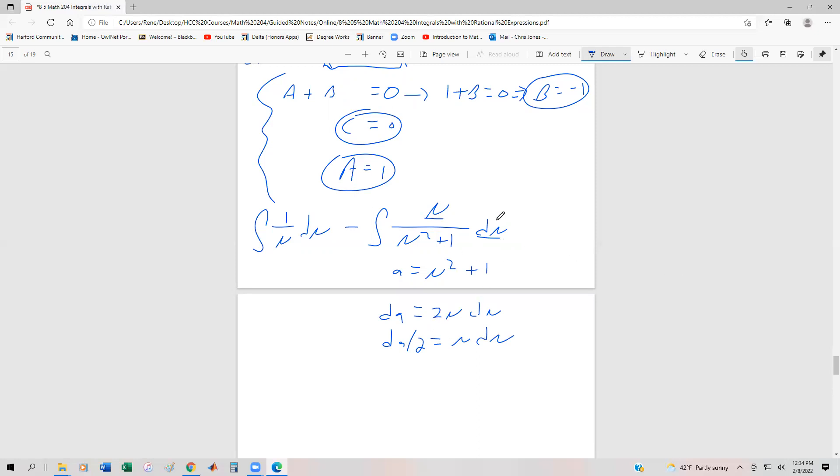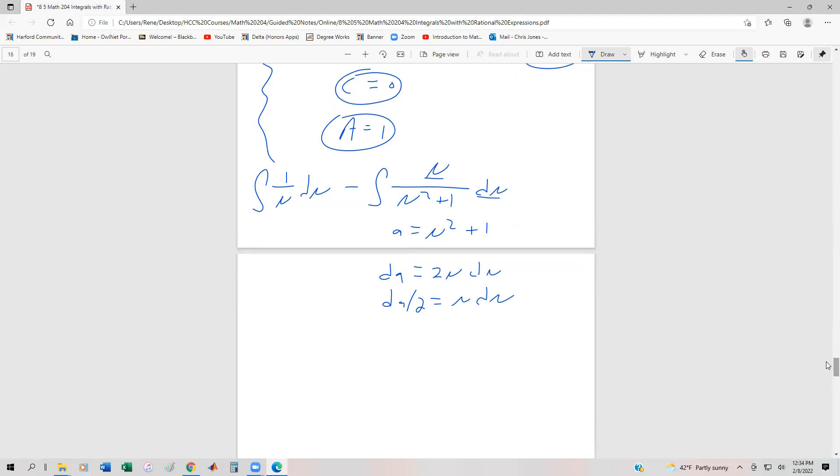So now we have an integral that's in terms of A that was originally in terms of u that was originally in terms of x trigonometric. But the good news is we're getting really close to finishing this off. Integral one over u du stays minus the integral of dA over two divided by A. And so just by integrating those, this is ln|u| minus one half ln|A| plus C.